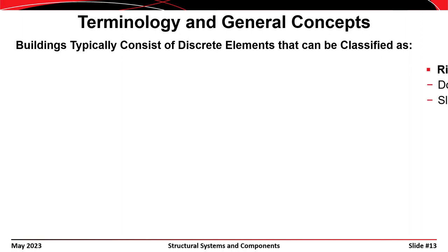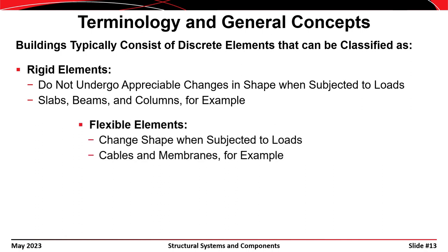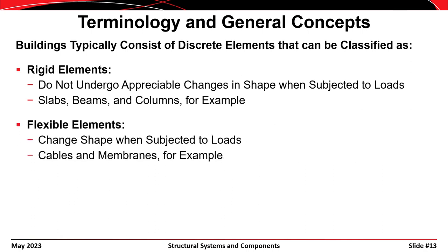Another way to classify members is as either rigid elements or flexible elements. Rigid elements are elements that don't undergo any appreciable change in shape when subjected to loads. A beam, column, or concrete slab might deflect a little, but they really don't go under any appreciable change in shape. Flexible elements, on the other hand, are things like cables and membranes that are expected to change in shape appreciably under load.